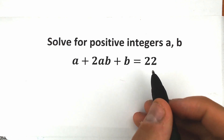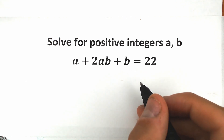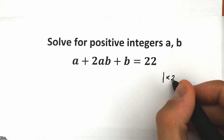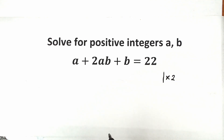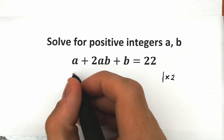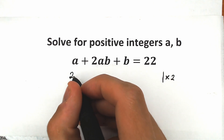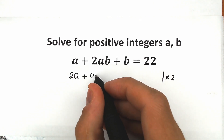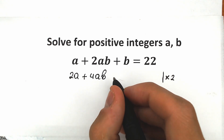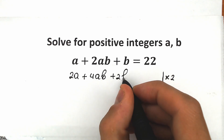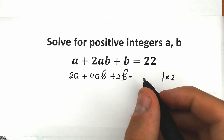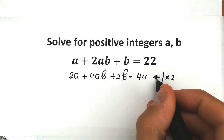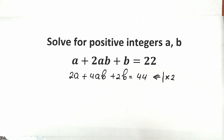First of all, let's multiply both sides by 2. This is our first step — we multiply both sides by 2. On the left side we have 2a plus 4ab, and plus 2b, equal to 44.